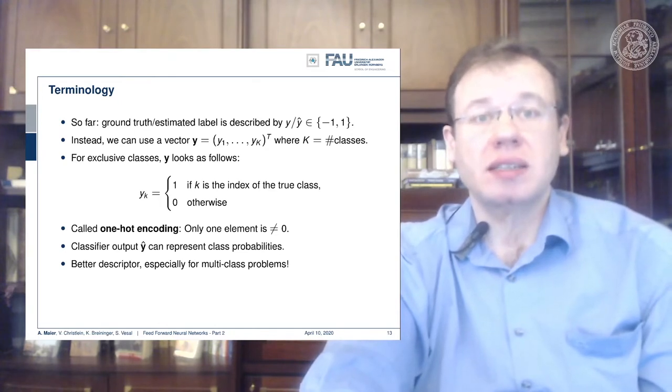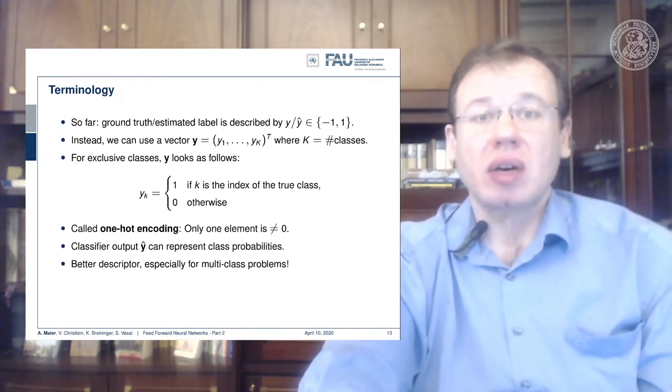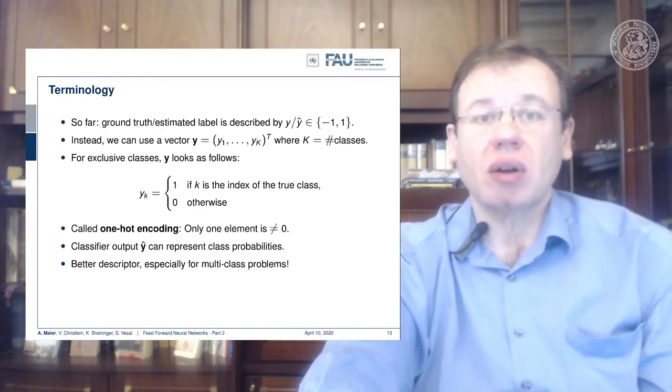The vector has all zeros except for one position, which is the true class. This is also called one-hot encoding because only a single element has a value of one.